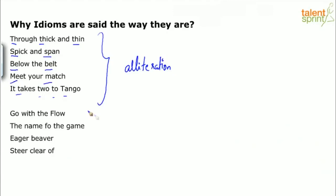Now let's look at the next set: 'go with the flow,' 'the name of the game,' 'eager beaver,' 'steer clear.' There is some rhyme or rhythm to the way these idioms flow. One of the ways it's easier to remember is when there's some alliteration or a rhyme — rhythmic, rhyming words. That's another way which helps you remember idioms and phrases.